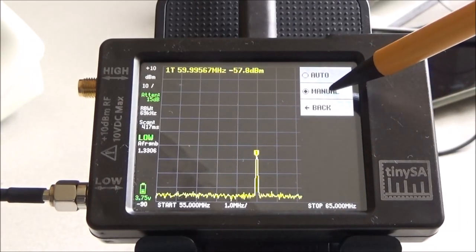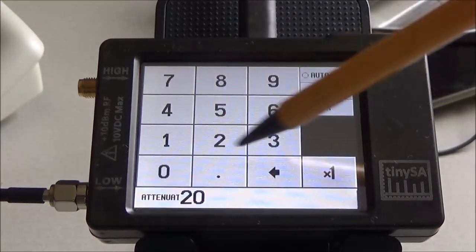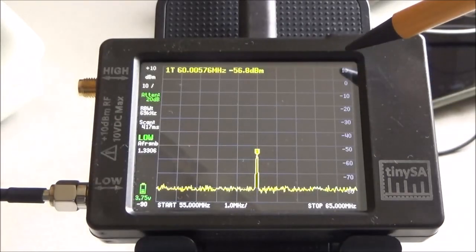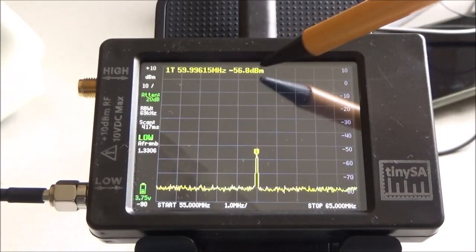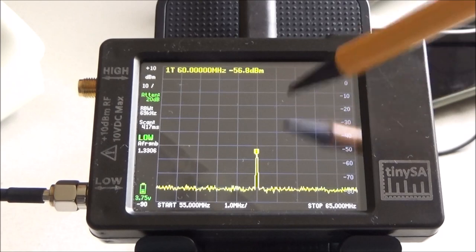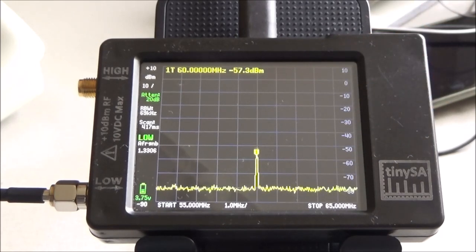And you can go even further, you can say, well, let's go for 20 dB attenuation, and then the level is still the same, so you're sure that the measurement is okay. I hope these three simple examples of what can go wrong can help you to prevent mistakes when doing measurements with your TinySA.